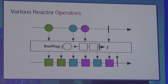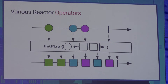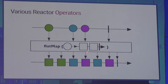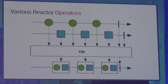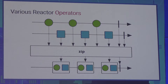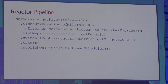There are various operators available: flatMap works similarly to Java 8 streams flatMap, converting one element into multiple elements in the same stream. You can also split one stream into two separate streams using groupBy, or combine two streams by zipping one element from each into a combined stream. There are many different possibilities for composing reactive pipelines.